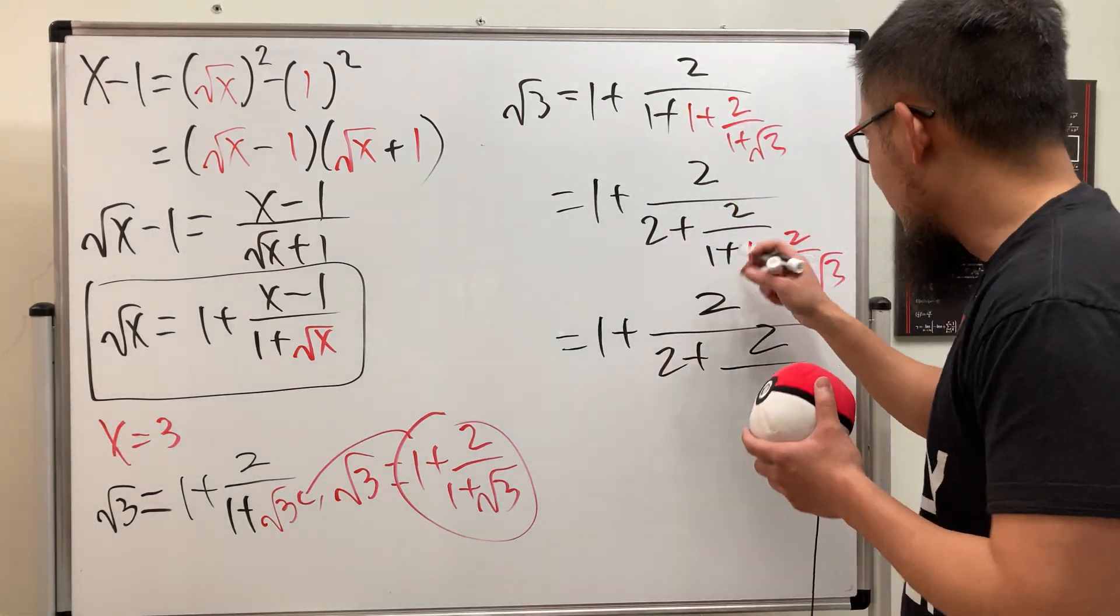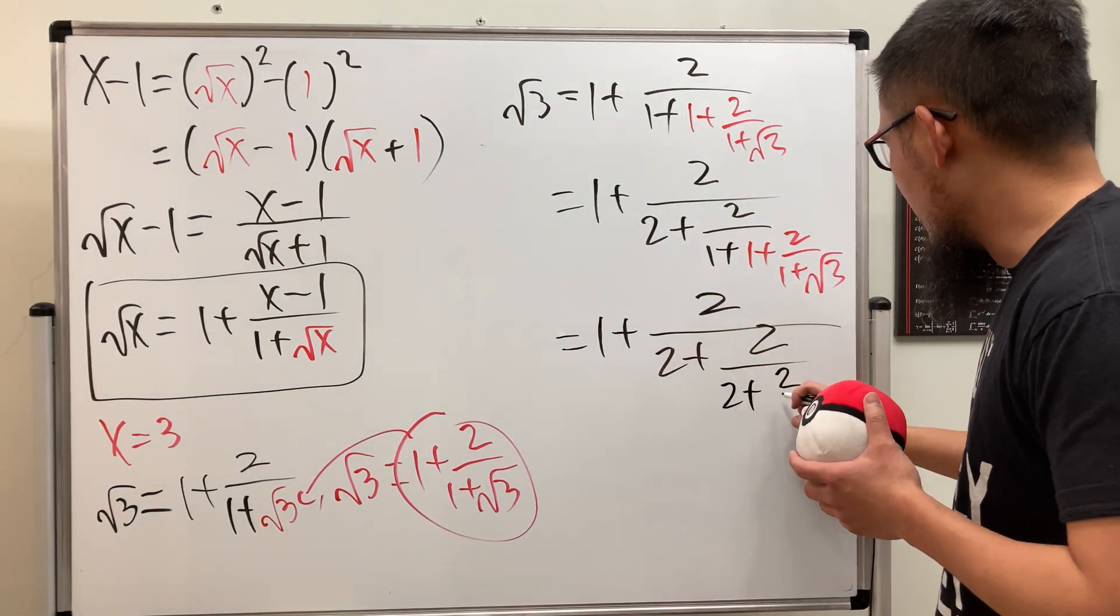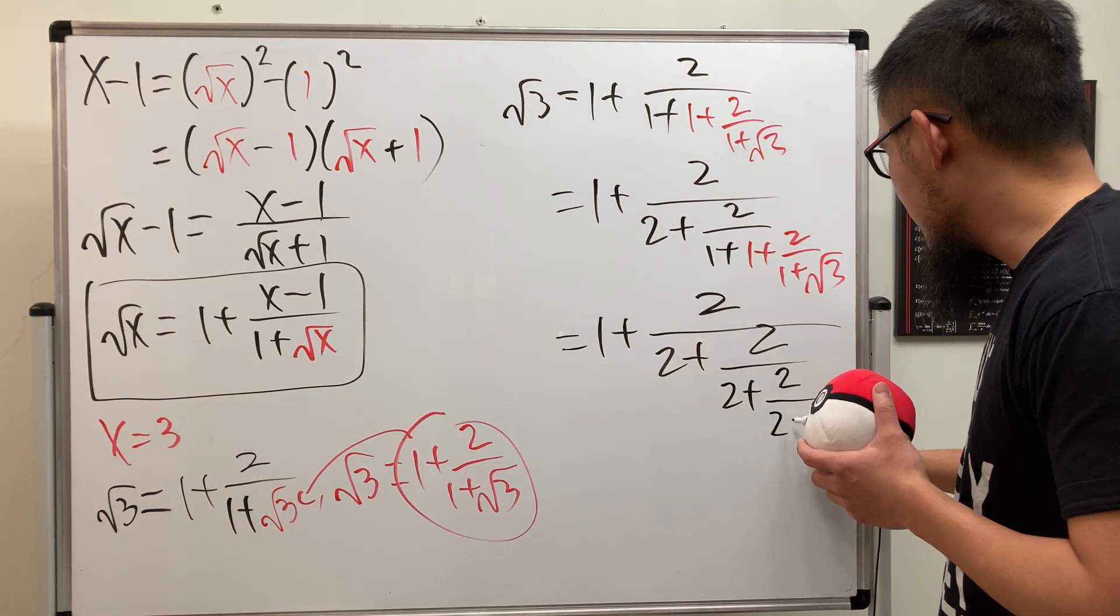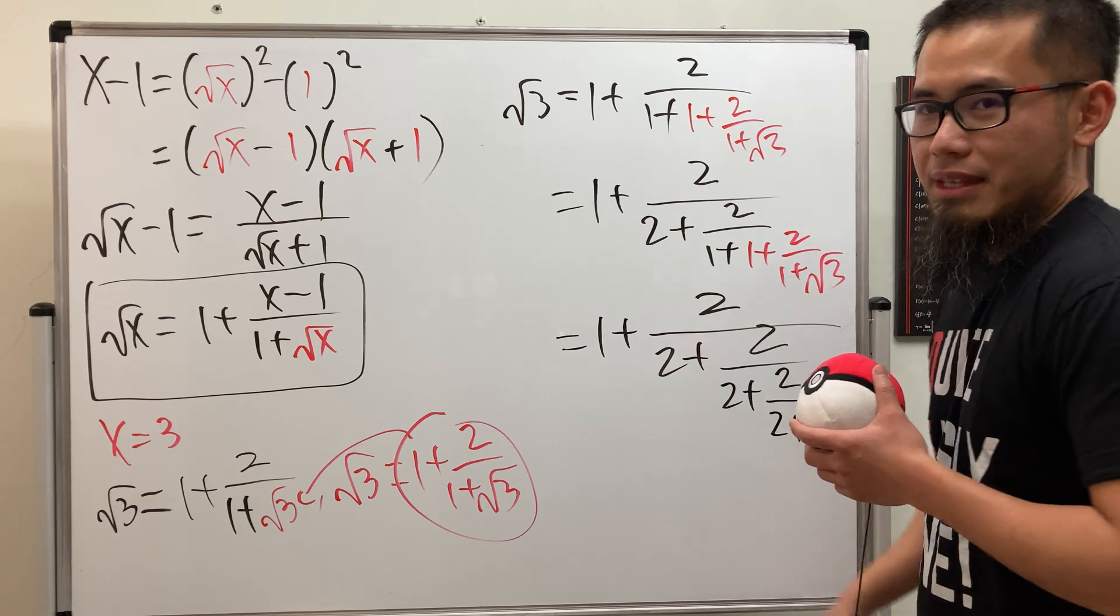You know what? This right here is just going to be 2 plus 2 over 2 plus, 2 over 2 plus, yeah, there you go.